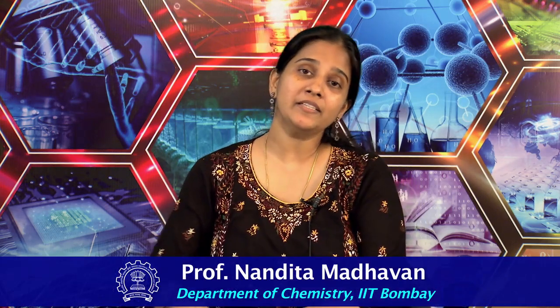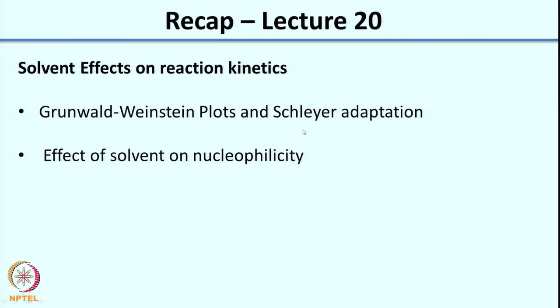Welcome back. In the last class, we were looking at solvent effects on reaction kinetics. In the previous lecture, we had looked at solvent effects on thermodynamics or equilibrium as well — particularly linear free energy relationships, including Grunwald-Winstein plots and the Schleyer adaptation. Reactions involving a polar intermediate like SN1 or E1 show greater solvent influence. We also looked at the effect of solvent on nucleophilicity, solvents like DMF and DMSO, and how crown ethers improve solubility of salts in organic solvents.